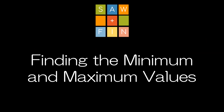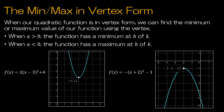Finding the minimum and maximum values of a quadratic function. Now that we're familiar with the graph, it makes sense that we can easily find a minimum or maximum value — that's just finding the y-value of the vertex. When a > 0, the graph has a minimum: the minimum is the k-value, occurring at x = h. When a < 0, the graph has a maximum of k at x = h. For example, a maximum of −1 at x = −2.